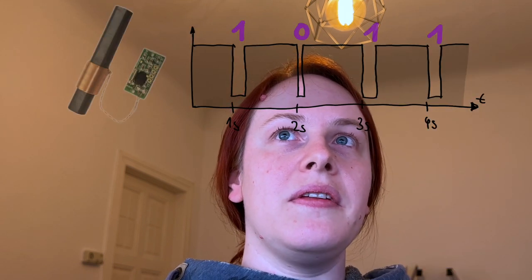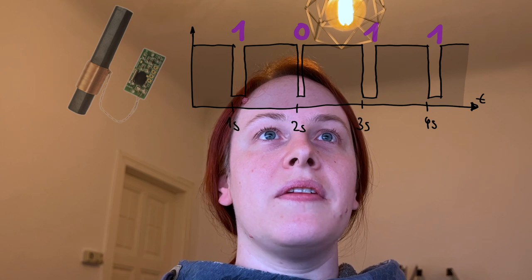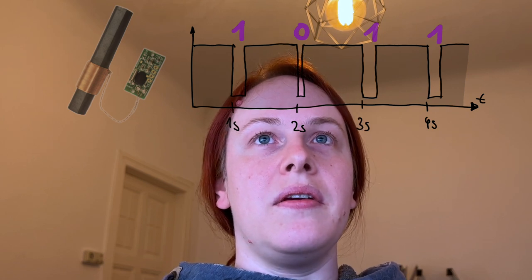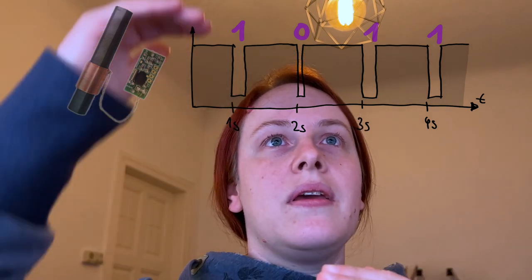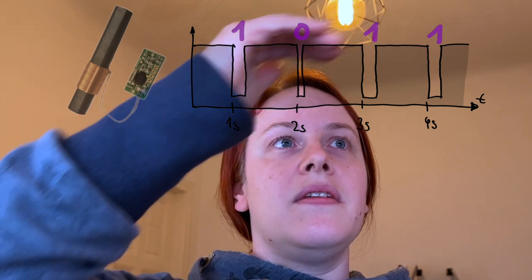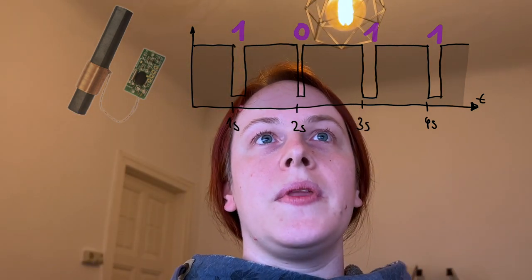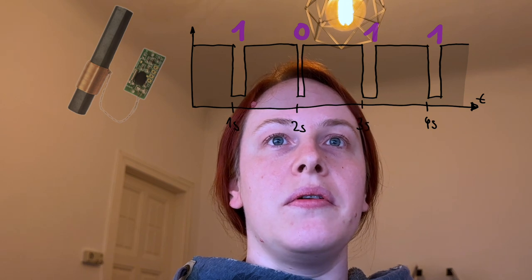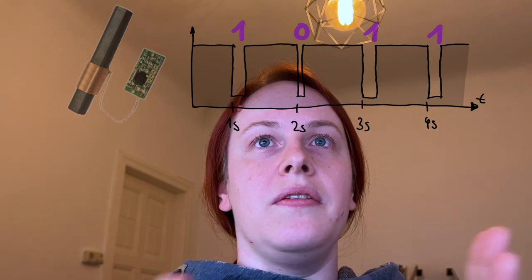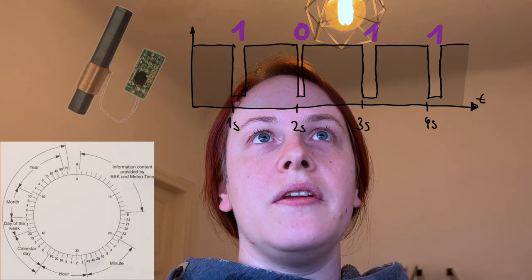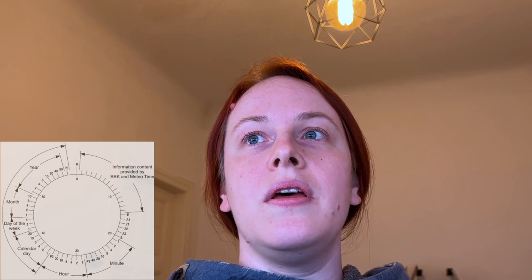DCF77 is a signal that is sent to synchronize watches and their time. You have a peak once a second, and the peak can be either short or long. Depending on this, a one or zero is transmitted, the second is synchronized, and you can encode 60 bits per minute to transmit the date and current time.